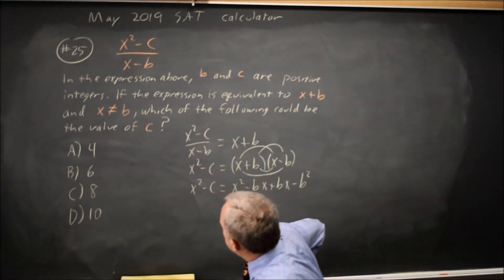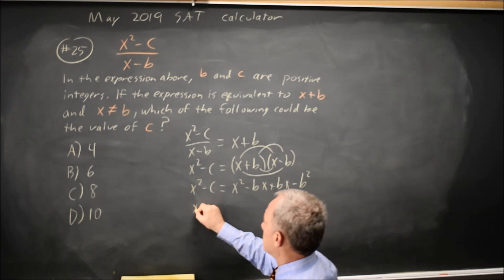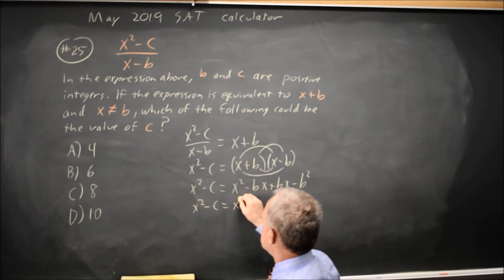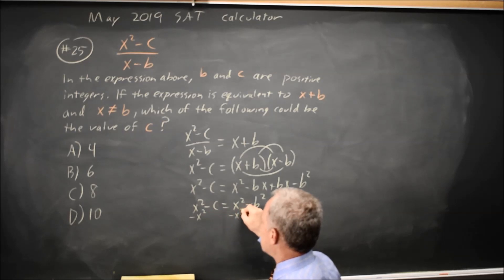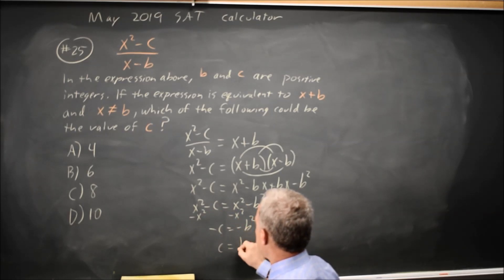Giving me x squared minus c equals x squared minus b squared. Subtract x squared from both sides. Negative c equals negative b squared, or c equals b squared.